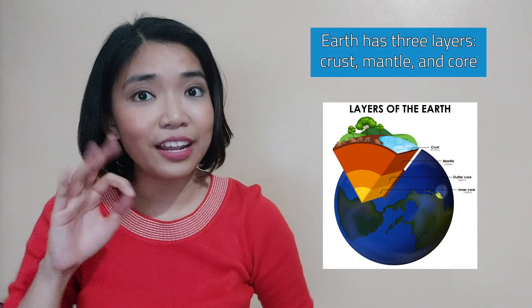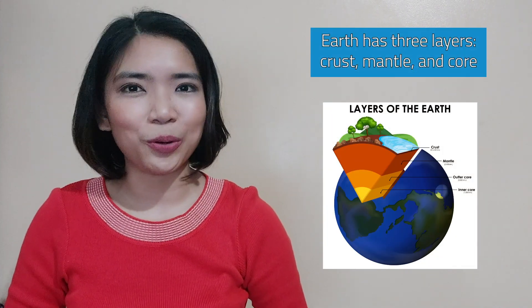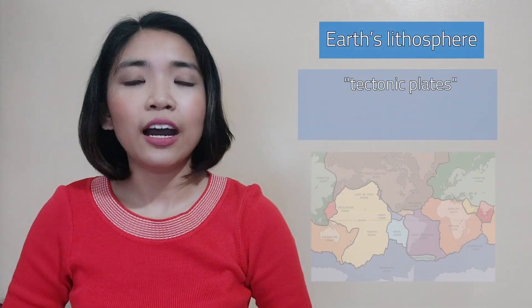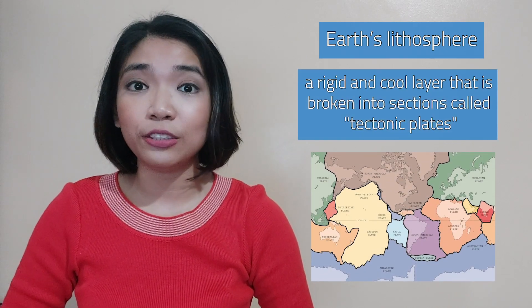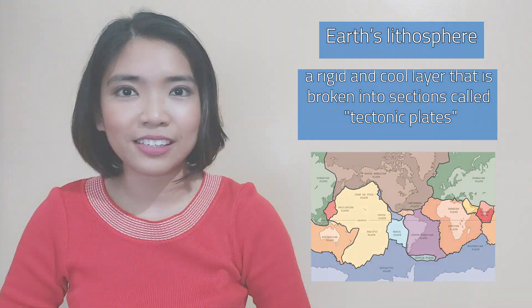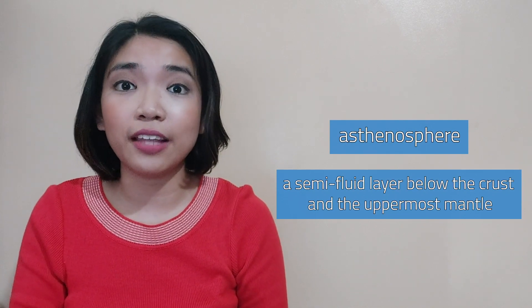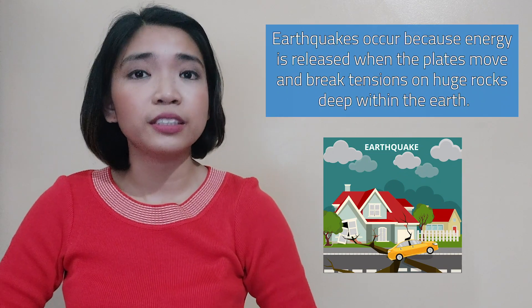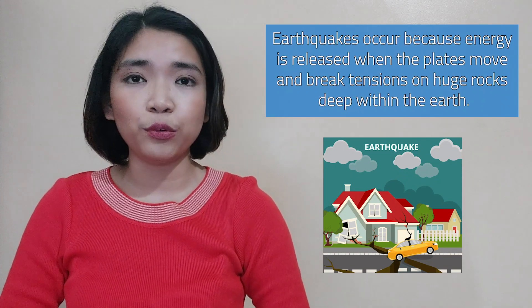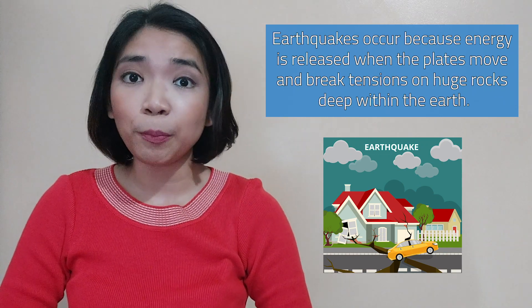Why do earthquakes occur? The Earth has three layers: crust, mantle, and core. The crust and uppermost mantle form the Earth's lithosphere, a rigid and cool layer that is broken into sections called tectonic plates. These plates lie on top of the asthenosphere, a semi-fluid layer below the crust and the upper mantle. It consists of molten rocks that move slowly and continuously, causing the plates on top to move as well. The reason why earthquakes occur is because energy is released when the plates move and break tensions on huge rocks deep within the Earth.